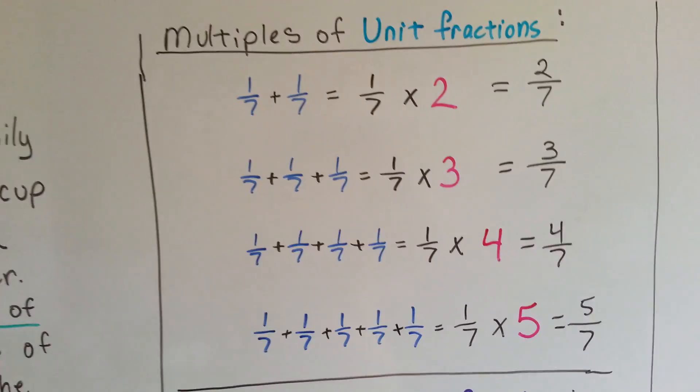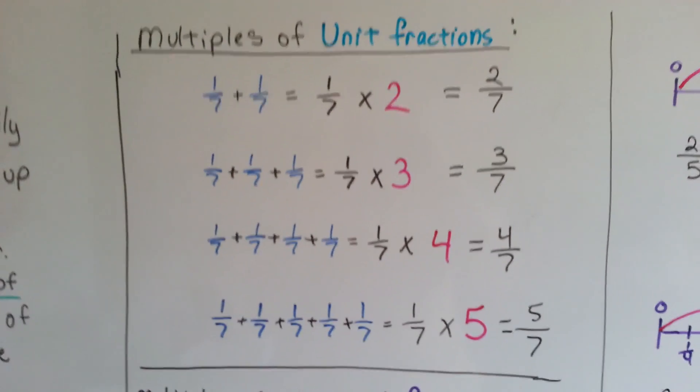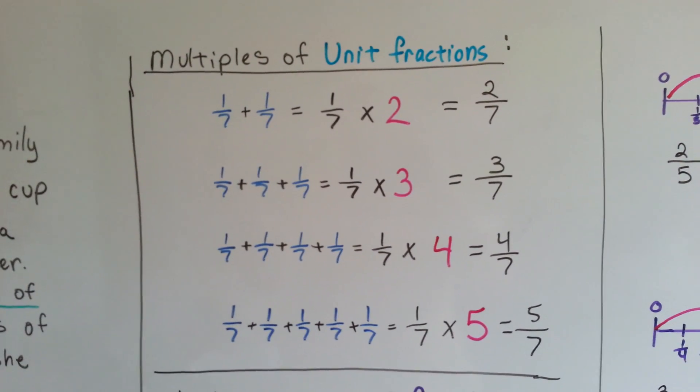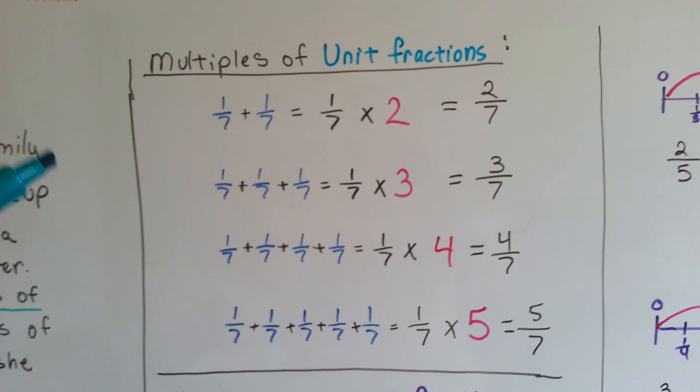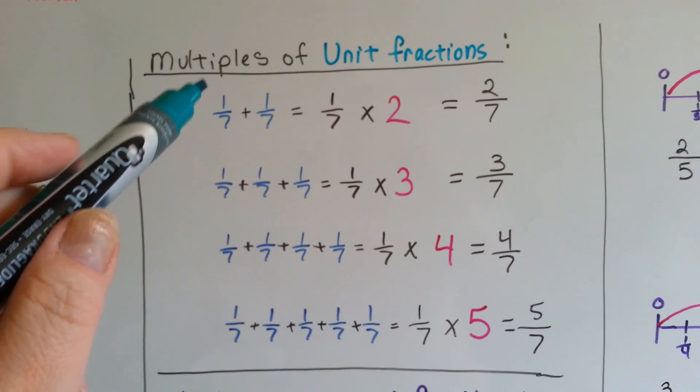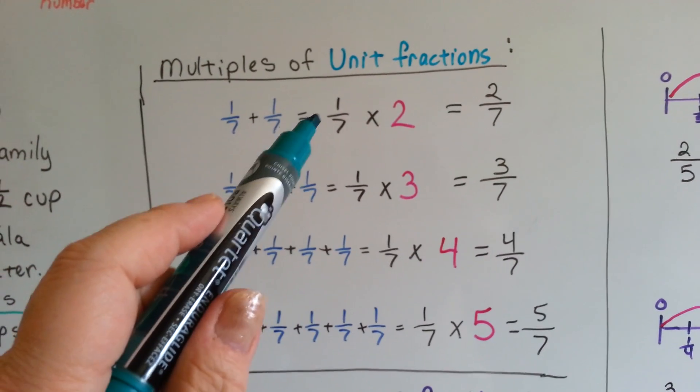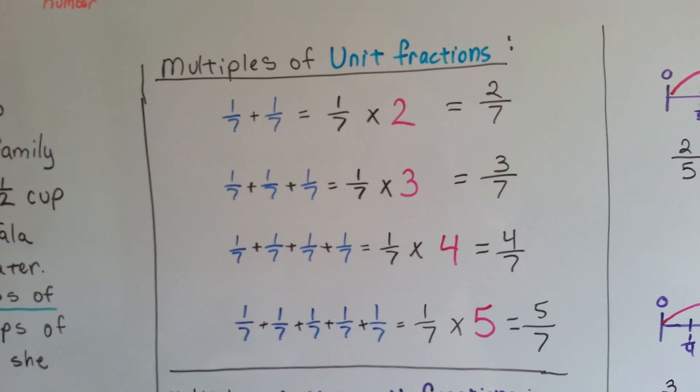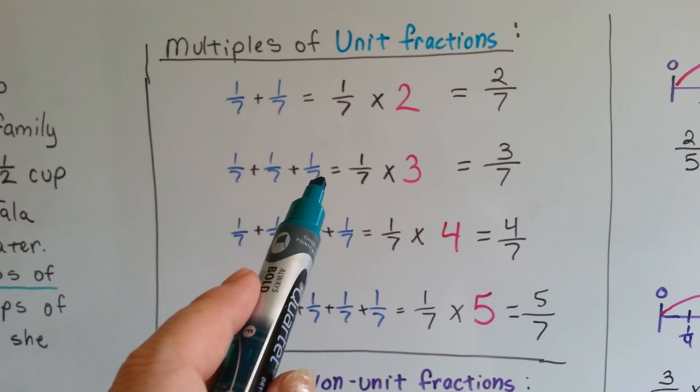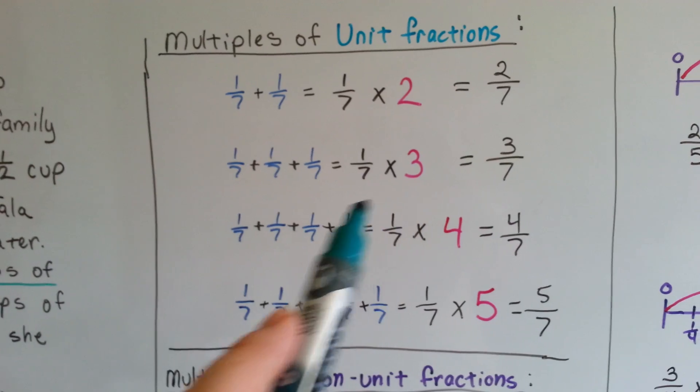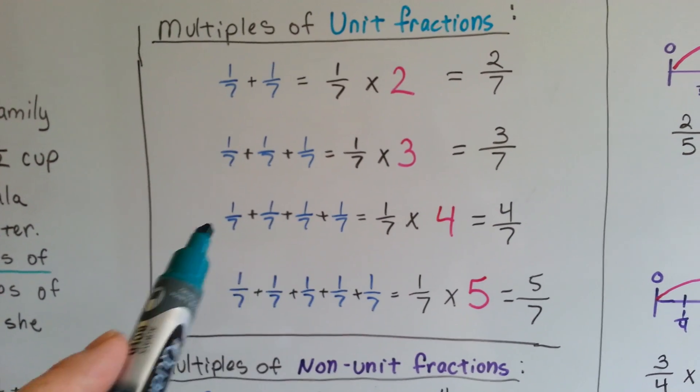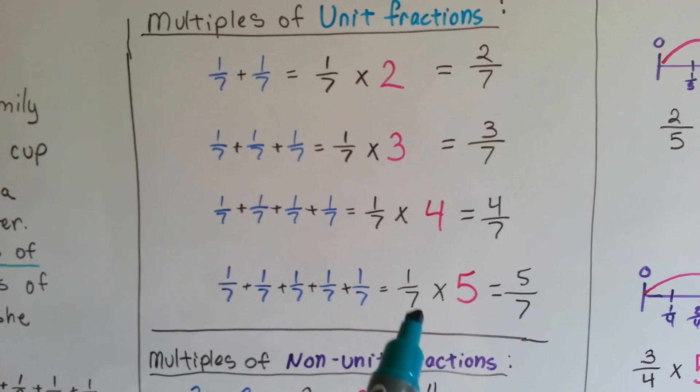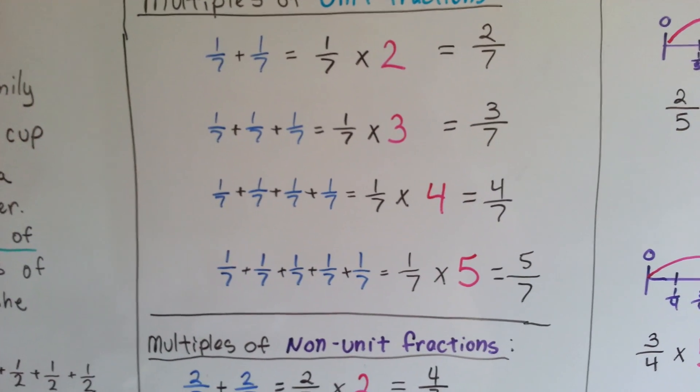Here's what we covered in a nutshell in the last video. We did multiples of unit fractions and we explained the identity property, which is anything times 1 is that number. 3 times 1 is still 3. 1 seventh plus 1 seventh is the same thing as 1 seventh times 2, because we have it 2 times. 1 seventh times 2 is 2 sevenths. If we had 3 of them, it would be the same thing as 1 seventh times 3, and it would be 3 sevenths. If we had 4, it would be 1 seventh times 4, or 4 sevenths, and so on. 5 would be 1 seventh times 5, which is 5 sevenths.